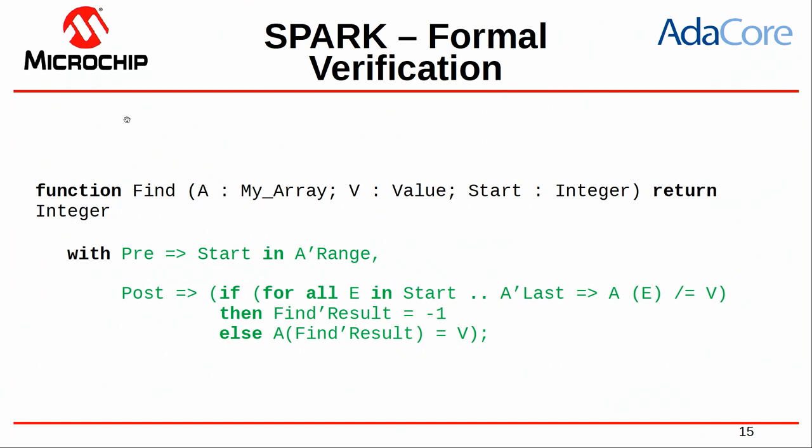The highest level you can achieve with SPARK and formal verification is proving the functional properties of your software. Here we define a function to find the index of a value in an array, and we clearly express the requirement in the programming language itself: if the value is not in the array, return minus one; otherwise, return the index of the value in the array. SPARK also gives you a mathematical proof that the implementation of this program respects the specification.